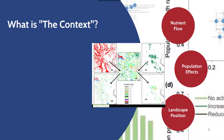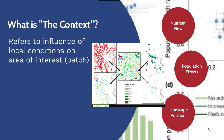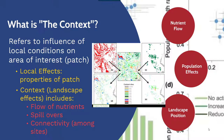To start with, we need to understand what landscape context refers to. It's essentially the influence of local conditions on an area of interest or a habitat patch. There are local effects such as the properties of the patch, and landscape effects of the context might include things such as the flow of nutrients, spillovers, population spillovers, as well as connectivity among the sites.